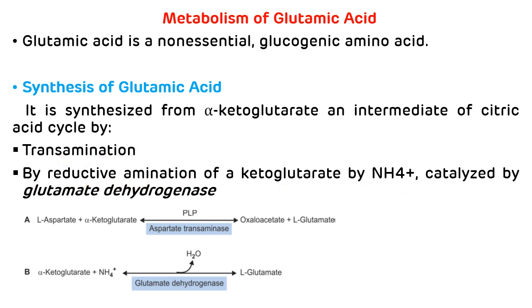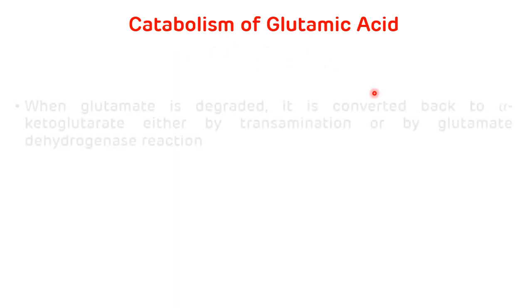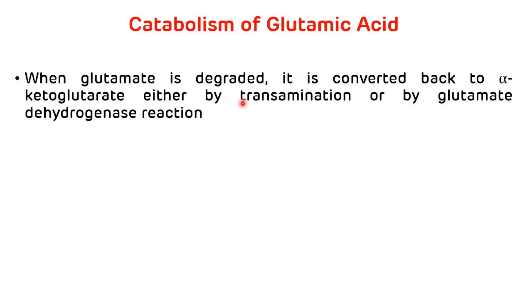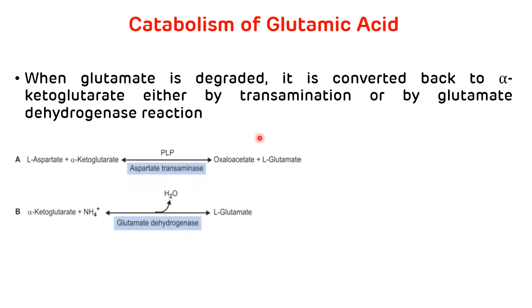This is how glutamic acid is synthesized — first with the help of transamination, and second with the help of reductive amination. Now let's see how glutamic acid is catabolized. When glutamate is degraded, it is converted back to alpha-ketoglutarate either by transamination or by reductive amination done with the help of glutamate dehydrogenase. Since both reactions are reversible, glutamic acid is catabolized by the same reactions.